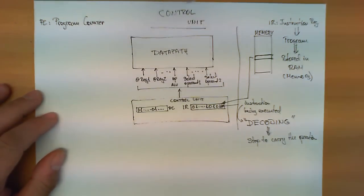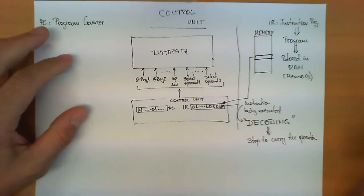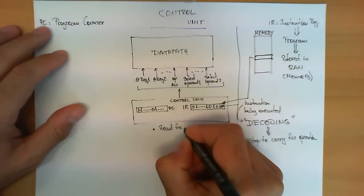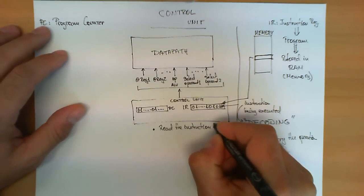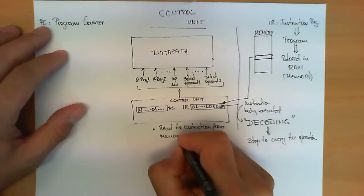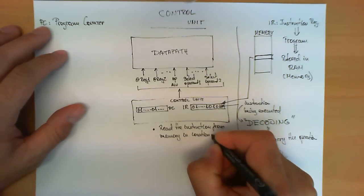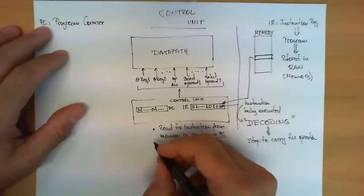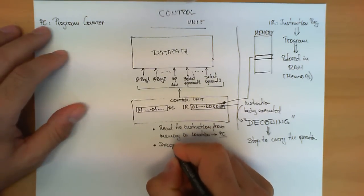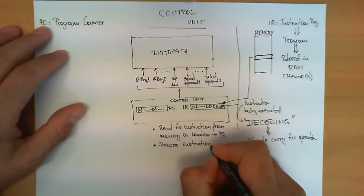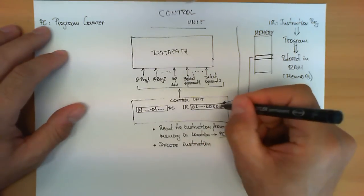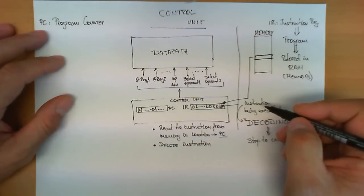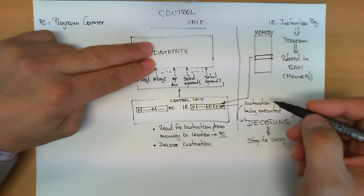For an operation such as adding two registers on the data path, the steps the control unit would follow are as follows. First, read the instruction from memory at the location given by the program counter. Once the instruction has been obtained from the position stated by the PC, it is stored in the IR. The next step is to decode this instruction — we need to know exactly what the 0s and 1s mean in order to interpret the next operation to execute. For this example, assume these combinations of 0s and 1s encode an operation where two values in two registers in the data path need to be added.